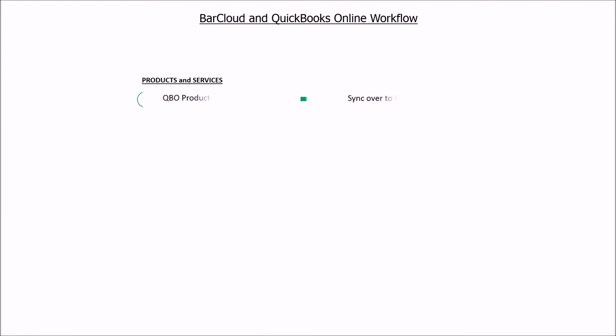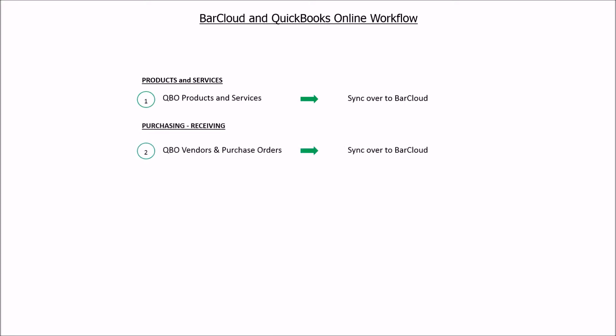The workflow would look like this. For products and services, QuickBooks Online products and services would sync to BarCloud. For purchasing and receiving, QuickBooks Online vendors and purchase orders sync to BarCloud. Receiving product into BarCloud would then sync over to QuickBooks Online and create the bill.